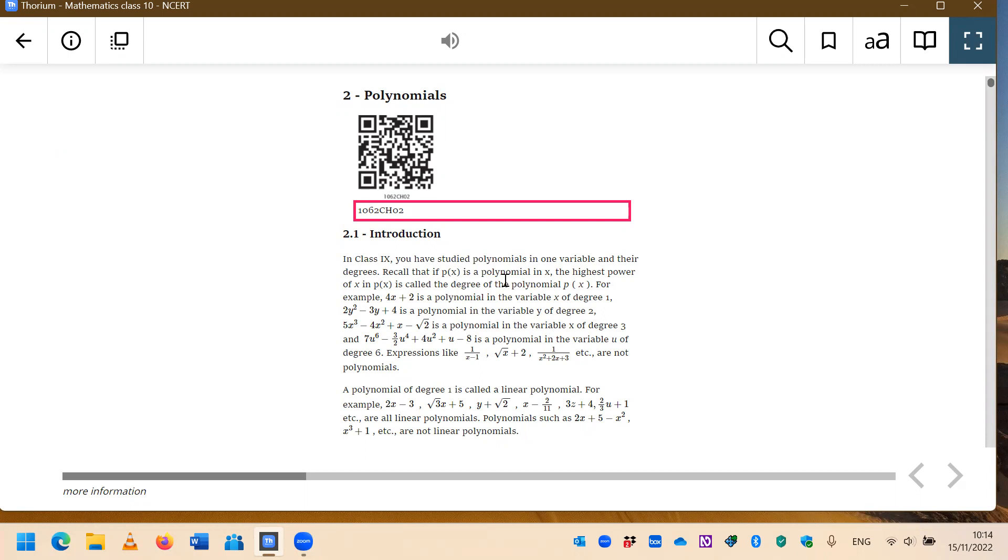My focus will—the screen reader's focus actually—will jump to the equation directly. Clickable 7u to the 6th power minus 3 halves u to the 4th power plus 4u squared plus u minus 8.